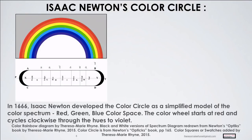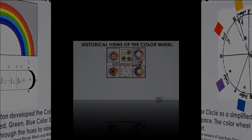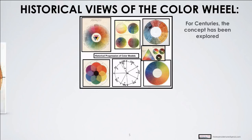Newton was the first person to develop the color circle that became the color wheel. He had the spectral colors. Does anyone notice a color missing that often appears on the color wheel? Otherwise known as magenta. Goethe, in 1810, put it there and it stayed there ever since. Newton only addressed spectral colors; Goethe added magenta.